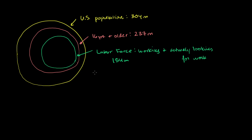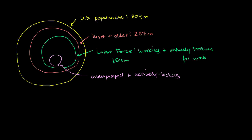The more important thing here is the idea of how the unemployment rate itself is calculated. Within the labor force, you have a subset that is actively looking for work — they don't have a job, but they're actively looking. This right here is the unemployed and actively looking group, sitting at around 15 million people. If you have a job, you're in the larger circle. If you don't have a job but are actively looking, you're in this inner subset.